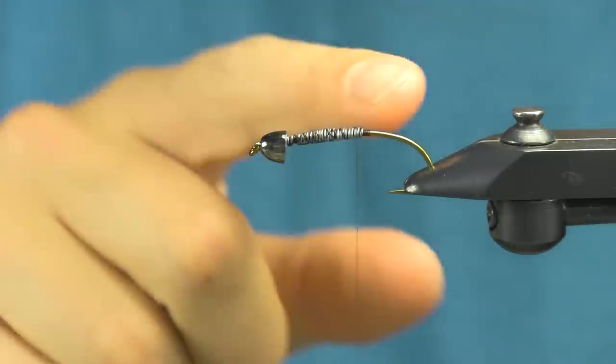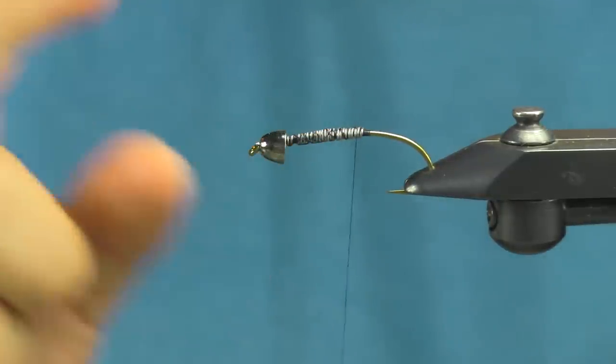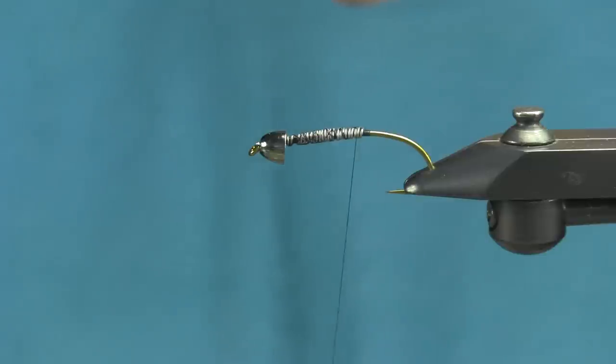The one thing I really like about this fly is I've got a lot of weight up here on the front. I can fish this on a floating line with a really short leader and kind of use it for hitting the pockets.